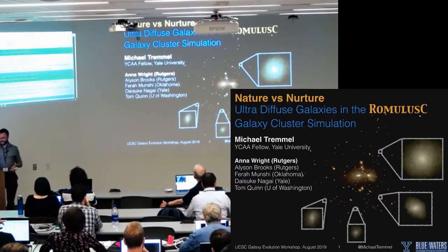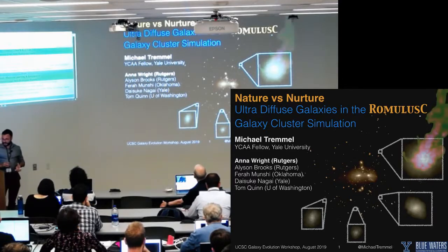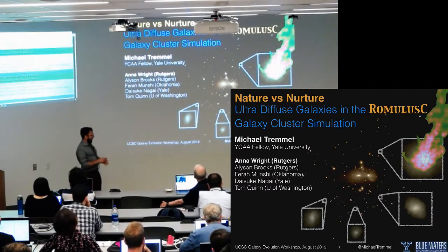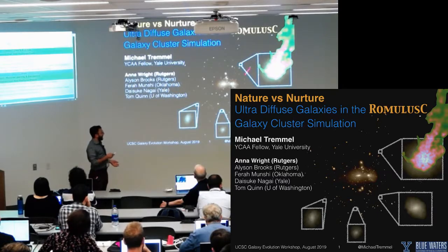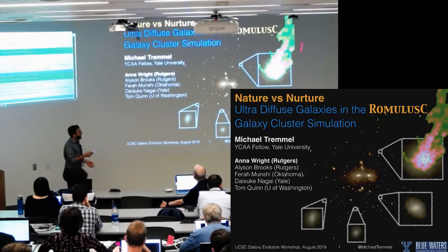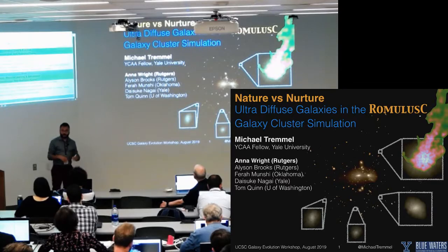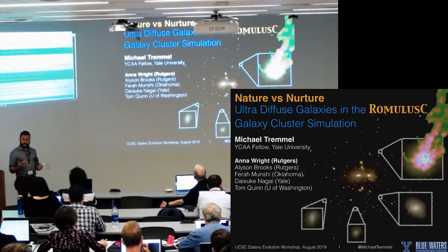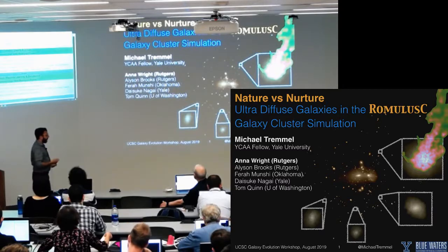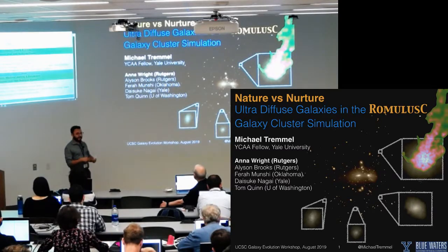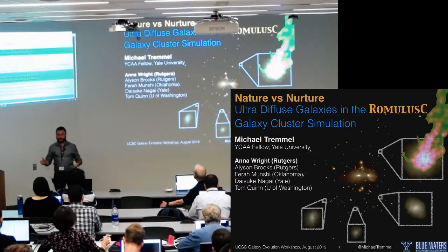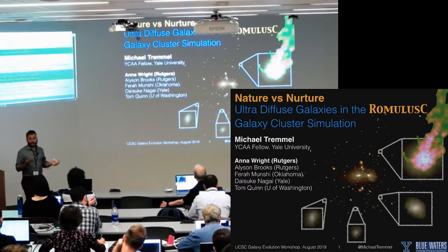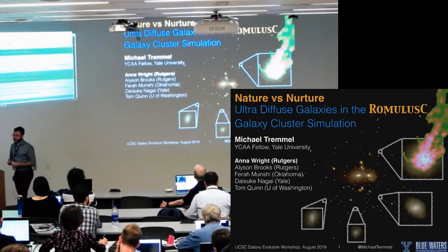I'll be arguing in favor of the vanilla picture where ultra-diffuse galaxies form through ram pressure stripping of their gas in the cluster environment. This is the main way in which the cluster environment helps the formation of UDGs. Once that galaxy quenches, passive evolution of the stellar population results in a low surface brightness dwarf galaxy that we would consider an ultra-diffuse galaxy.